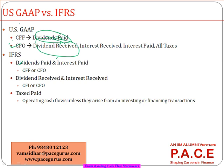Under US GAAP, dividend paid goes as cash outflow from financing activity. Under IFRS, any payment can be treated as either cash flow from financing or operations — whichever you choose, it must be mentioned in the footnotes. For receipts — dividend received, interest received — under IFRS, you can show them as cash flow from investment, since you invested and are receiving something, or you can show them under operations. But the choice must be disclosed in the footnotes.